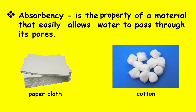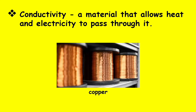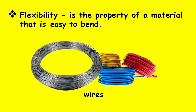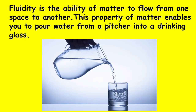Absorbency is the property of a material that easily allows water to pass through its pores. Paper, cloth, and cotton are absorbent materials. Conductivity is a material that allows heat and electricity to pass through it. A good conductor, for example, is copper. Flexibility is the property of a material that is easy to bend. Fluidity is the ability of matter to flow from one space to another.